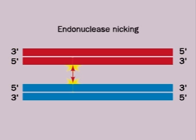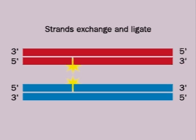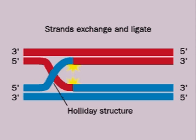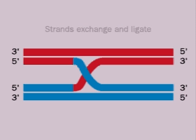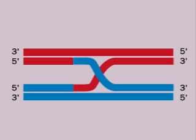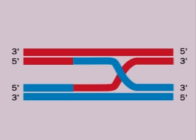First, an endonuclease cuts a nick in the sugar phosphate backbone of the adjacent strands. The free ends are ligated to the homologous strands of the other chromosome, forming the characteristic X of the Holliday intermediate structure. This cross-bridge, or branch, can migrate between the chromosomes, transferring one strand of each DNA helix to the opposite chromosome.